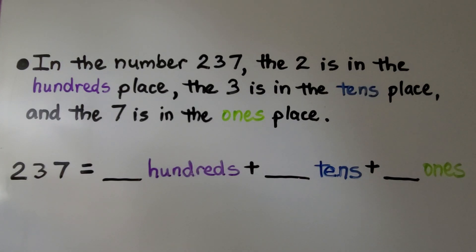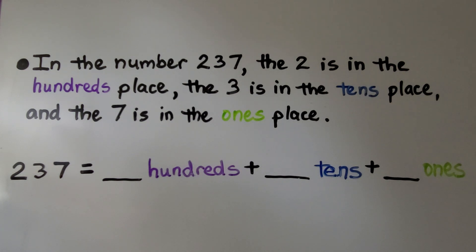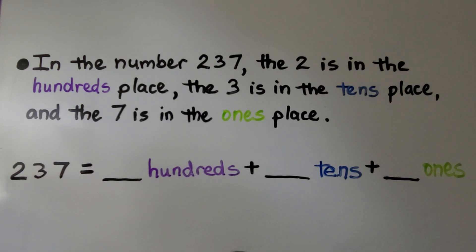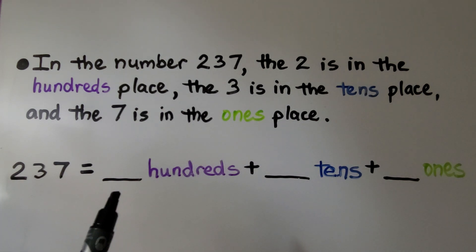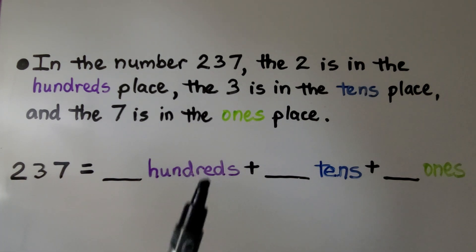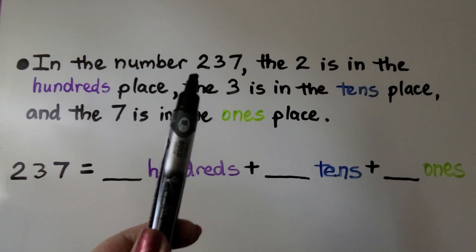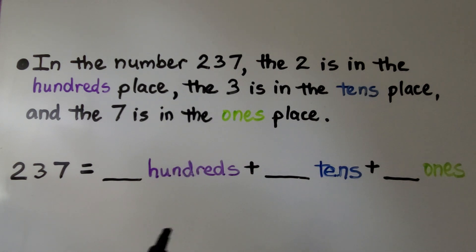In the number 237, the two is in the hundreds place, the three is in the tens place, and the seven is in the ones place. We can fill in these blanks with the correct numbers. 237 is equal to — it's telling us there's a two in the hundreds place.